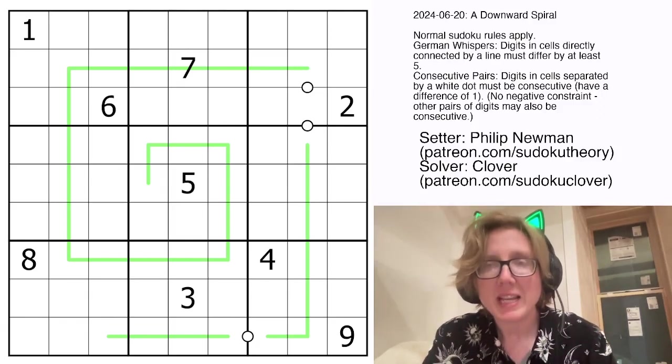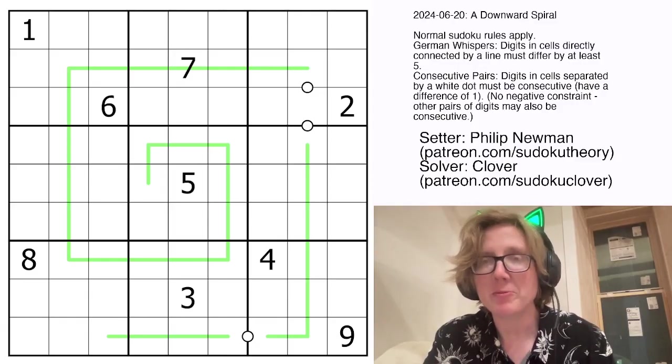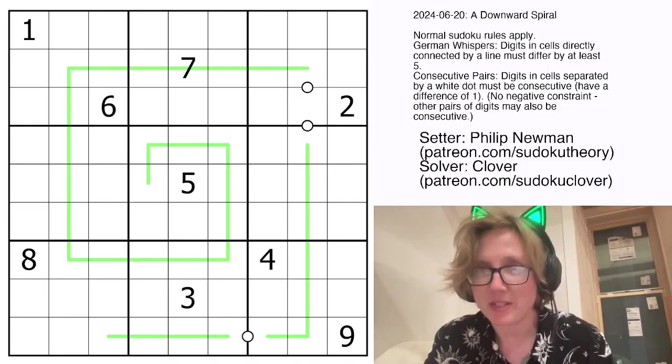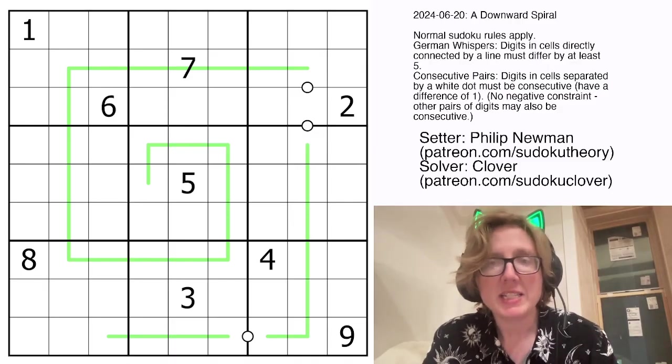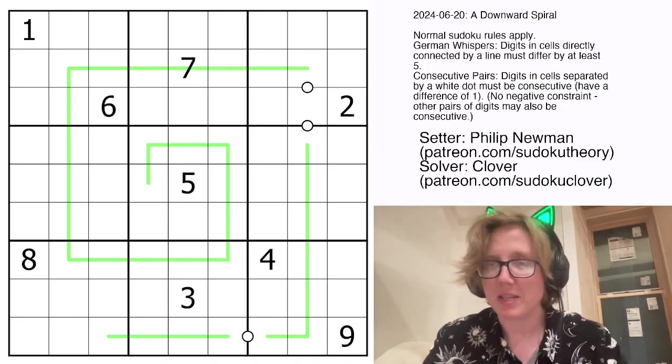Hello, my friends. I'm Clover, and today we are solving Philip Newman's puzzle called a downward spiral. This was originally posted on June 20th, 2024. And this is a German Whispers consecutive pairs Sudoku. So what does that mean?